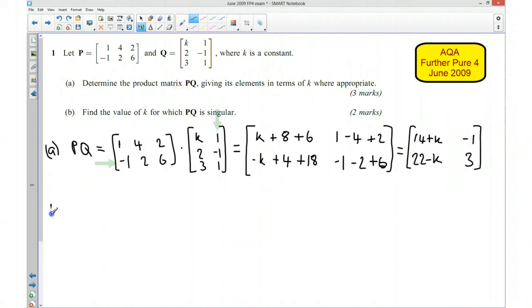Okay, part B. This is asking us to find the value of k for which PQ is singular. So PQ is singular when the determinant of PQ is equal to 0. So we're looking for the value of k that is going to make this equals 0. So you might want to have a quick go at that now and pause the video.